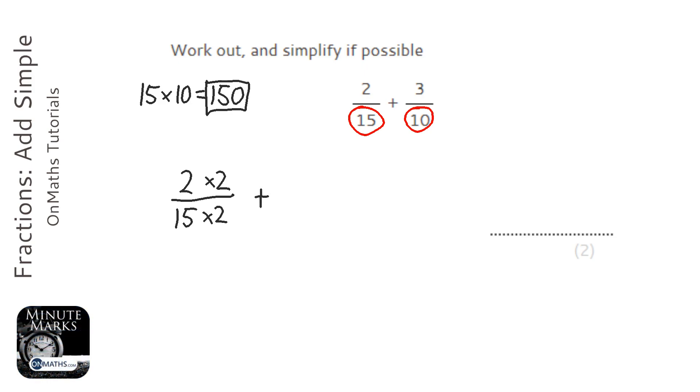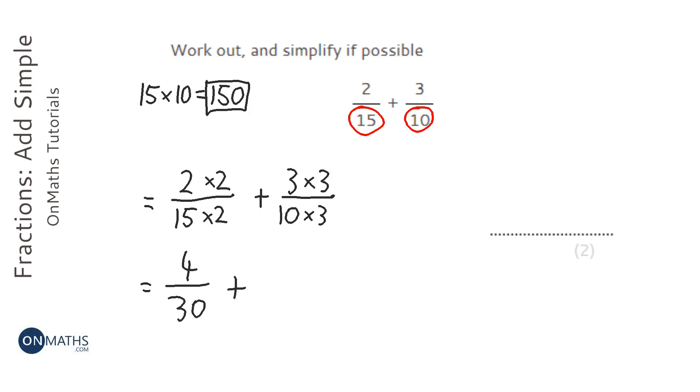Then I'm going to times the second fraction by 3. If I do that, then I get the bottoms to both be 30. So I'm going to rewrite the question again: 2 times 2 is 4 over 30, plus 3 times 3 is 9 over 30.